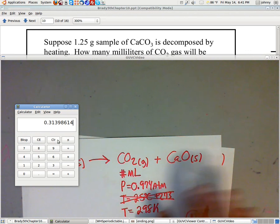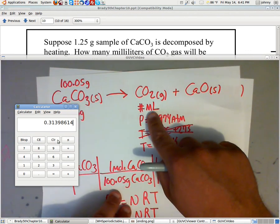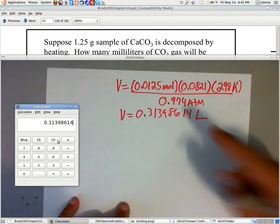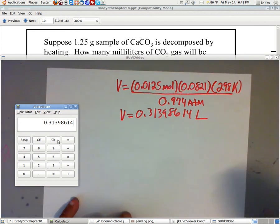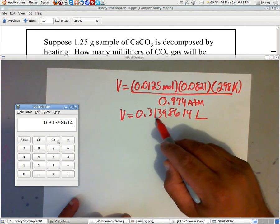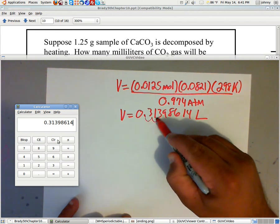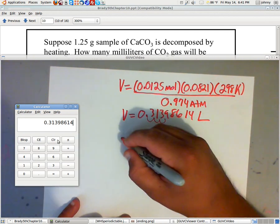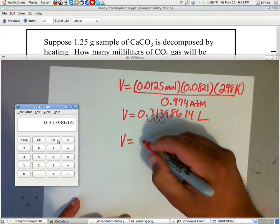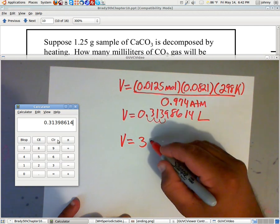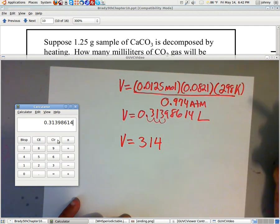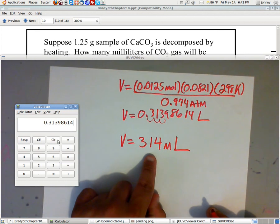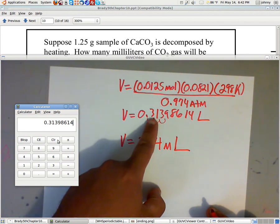The problem wanted me to find it in milliliters. I gotta convert this into milliliters. So basically, I need to swing the decimal three times. So, one, two, three. If you don't like that, then you can do dimensional analysis. But sig figs, I need three sig figs. So my volume here is going to be, that rounds to 314 milliliters. If you don't believe me, you can divide that by a thousand and you'll get this number up here.